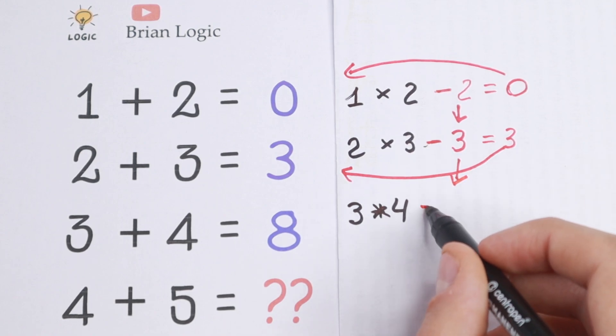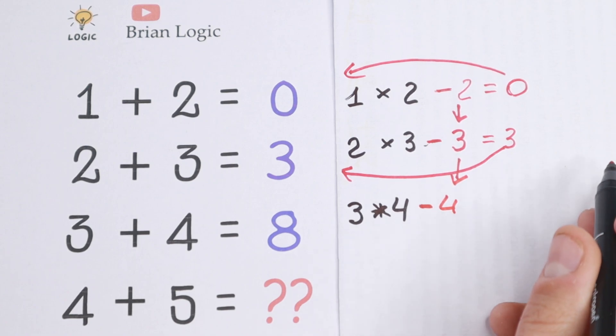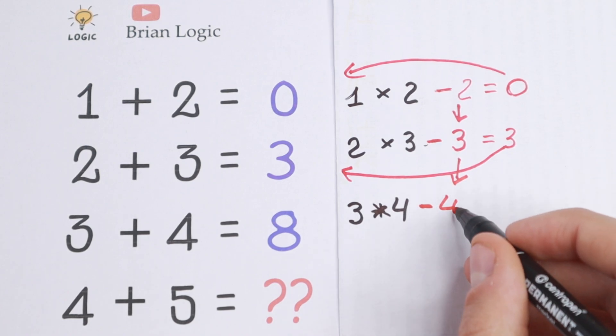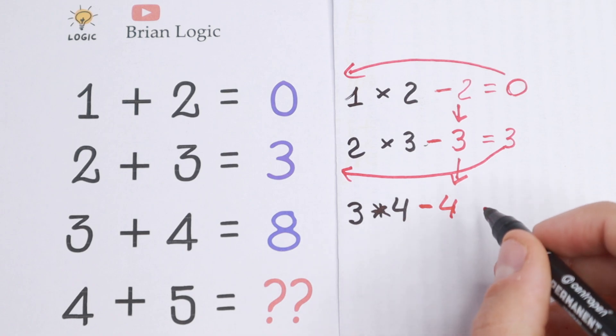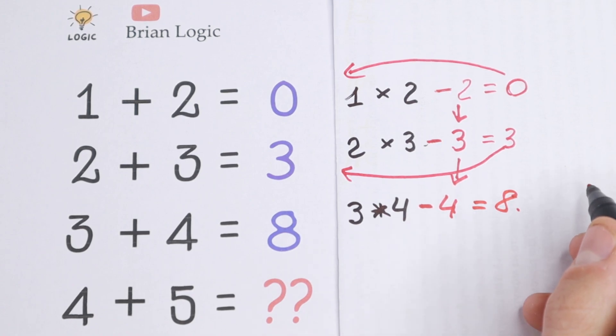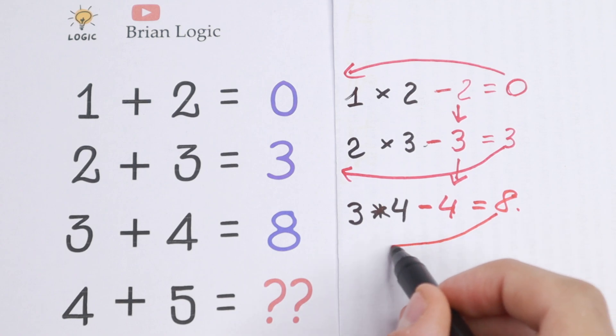And if we subtract it, we will have that 3 times 4, 12, 12 minus 4 will be 8. So I hope you see the pattern between these numbers.